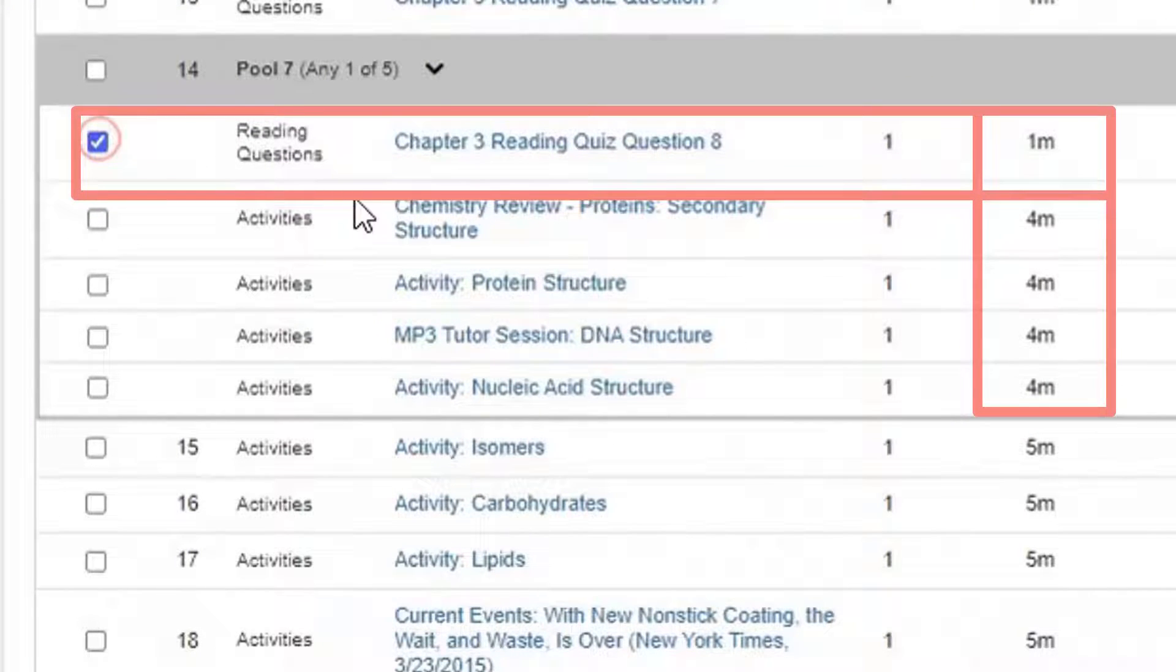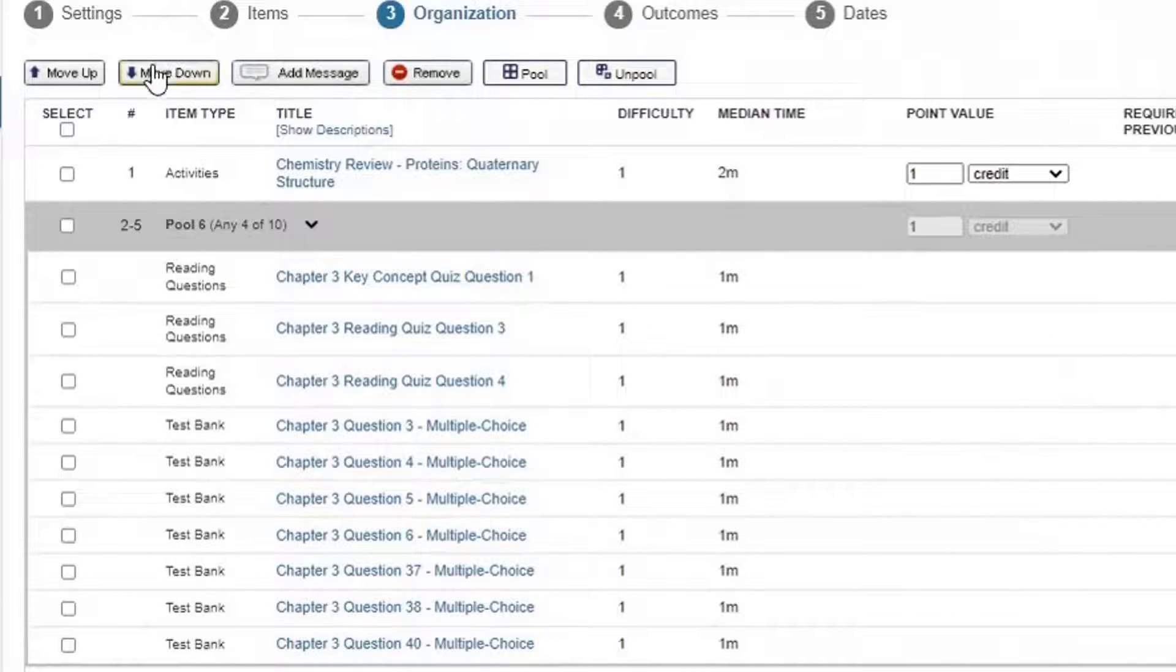If you accidentally include items that are much different than the average, select them and use Move Up or Move Down to move them out of the pool.